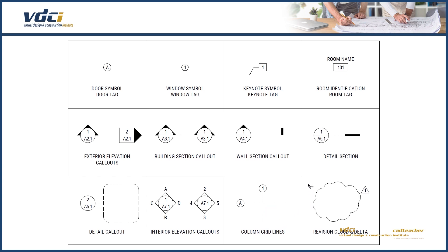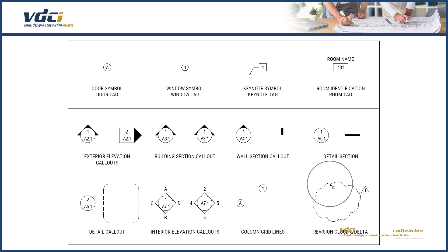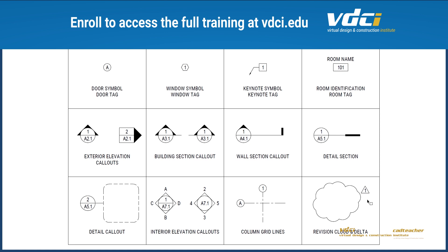As we're developing a set of drawings, everything is always changing. When we have made a modification, we typically put a revision cloud around it and a delta number, meaning change. The revision cloud is the bubble that surrounds the updated information. The delta is the triangle, and this will always include the revision number — in this case, number 1. This number references the revision legend, usually found in the title block, to keep track of the revision date and other notes.